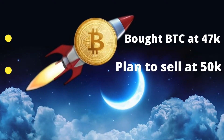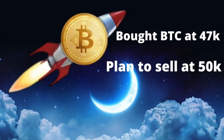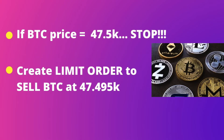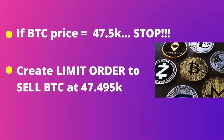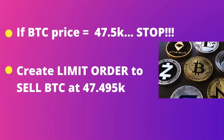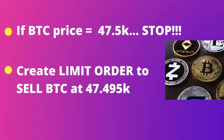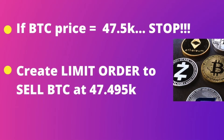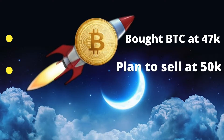The price falls to $30,000. If I don't have a stop limit order in place, by the time I wake up I would have suffered a huge loss. To protect myself, I can set a stop limit order: one, if the price of Bitcoin falls to $47,500, stop; two, create a limit order to sell my Bitcoin at $47,495. When I wake up and the price has fallen to $30,000, I haven't suffered a loss because I bought at $47,000 and sold at $47,500.